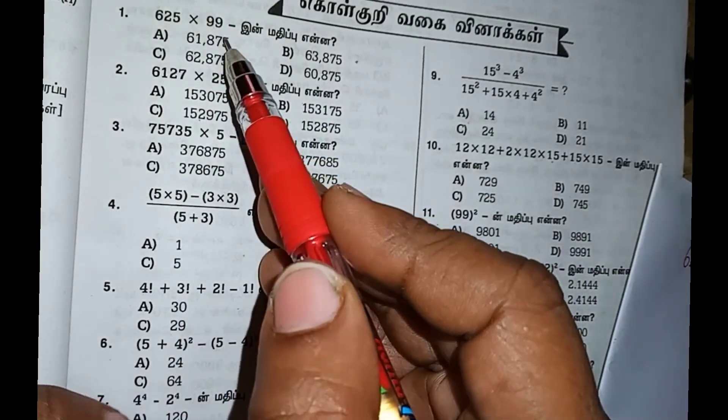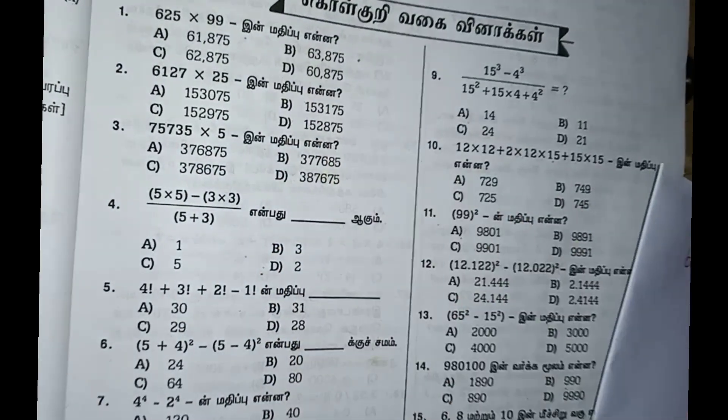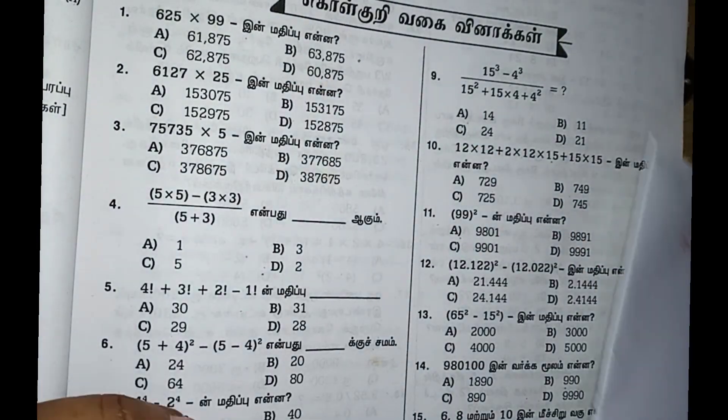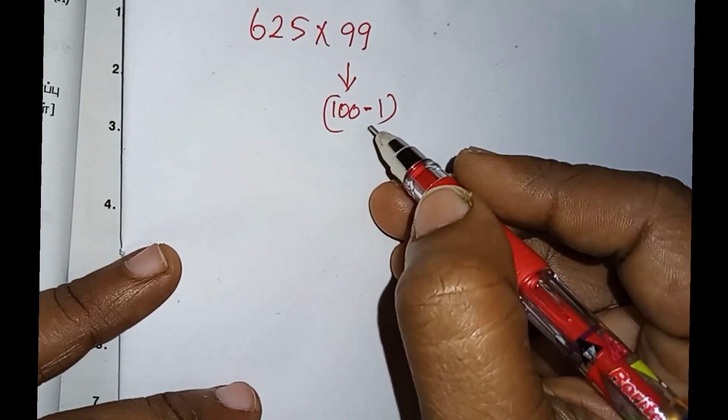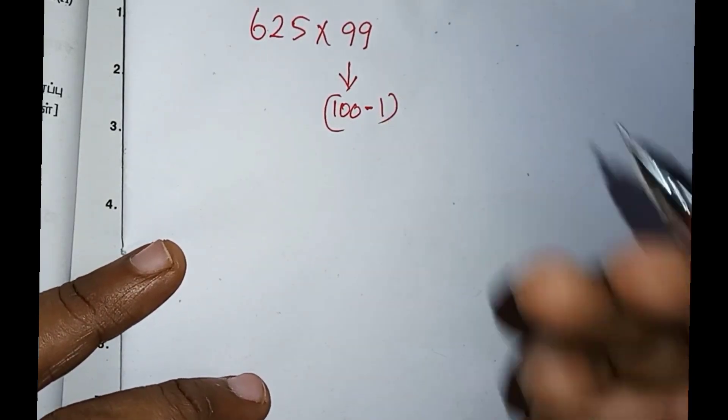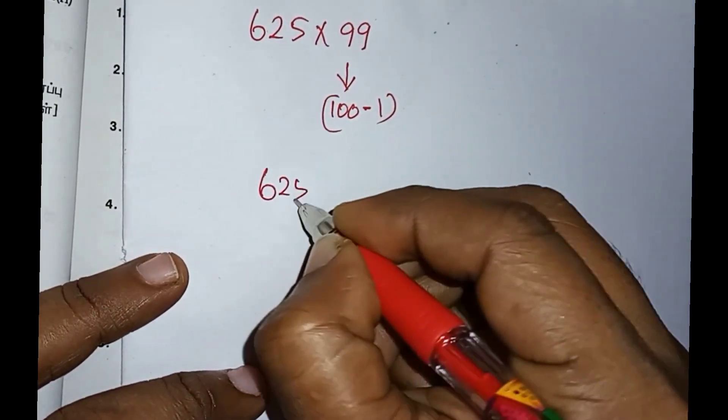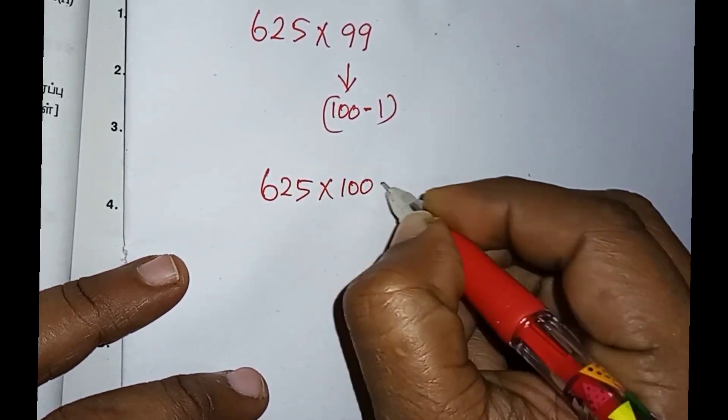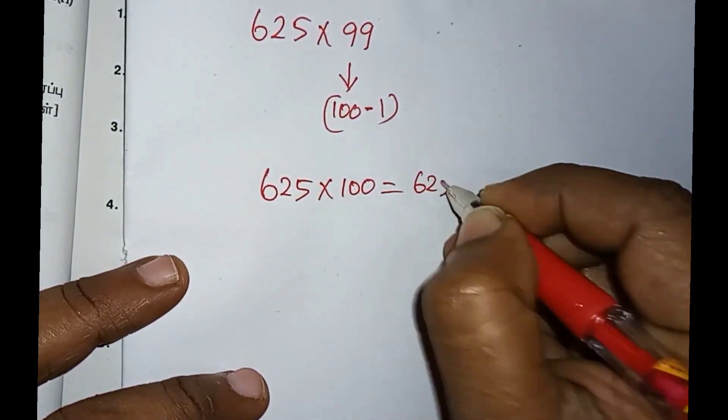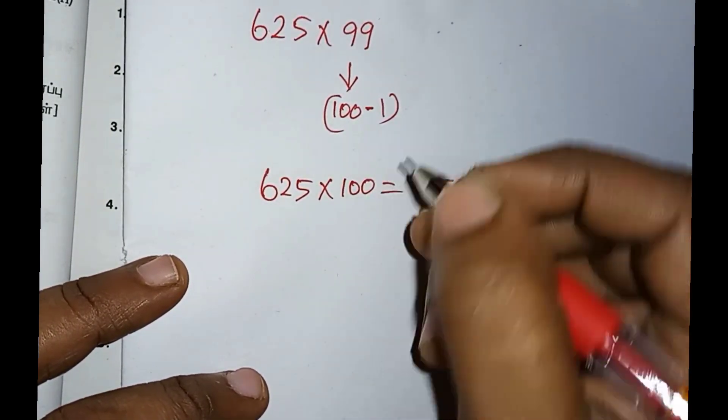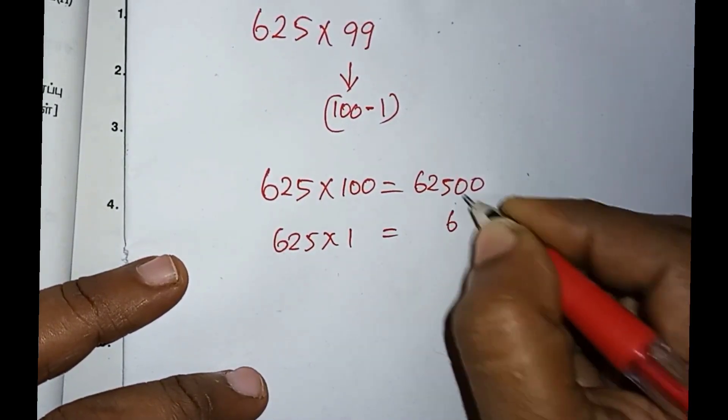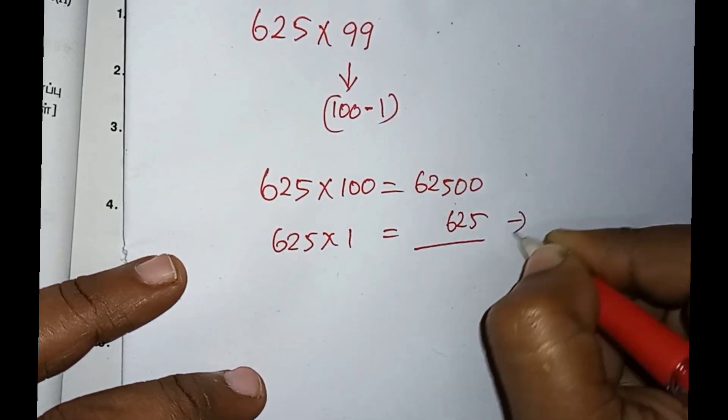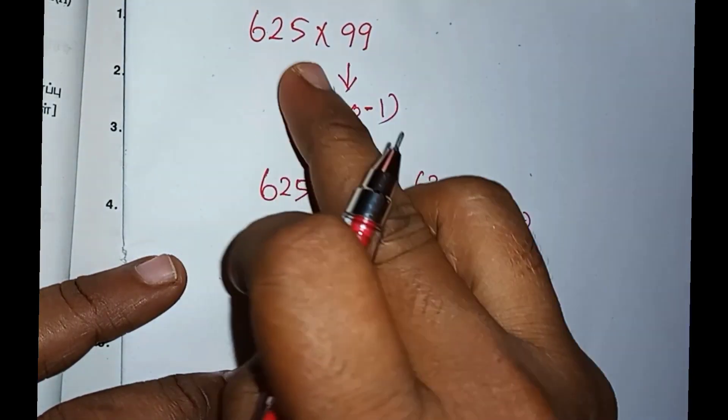625 times 99. I will say 99 is 100 minus 1. So I will multiply 625 times 100. If you multiply by 100, you add two zeros to that number, giving you 62500.